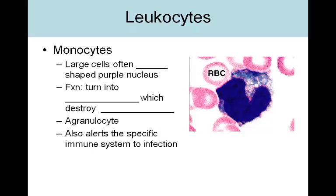So monocytes are considered to be agranulocytes — the prefix 'a' in biology means 'not,' so they're considered to not possess granules in their cytoplasm. Macrophages are very important for alerting the immune system to specific infection types, as we'll learn about later in the semester.